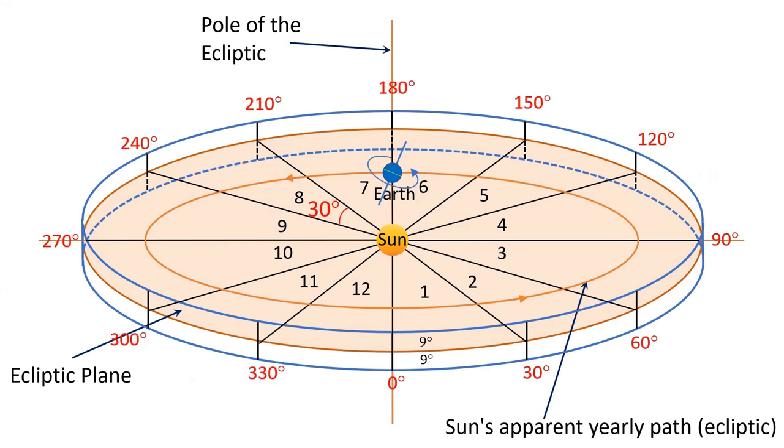Likewise, the twelfth or last sign starts at 330 degrees and finishes at 360 degrees which is called the end of the zodiac. This same zodiac is also marked by 27 constellations of stars called luna mansions or nakshatras and we'll talk about these in separate video.